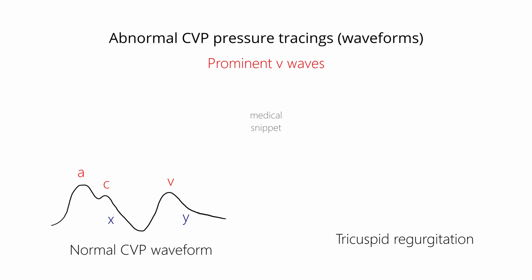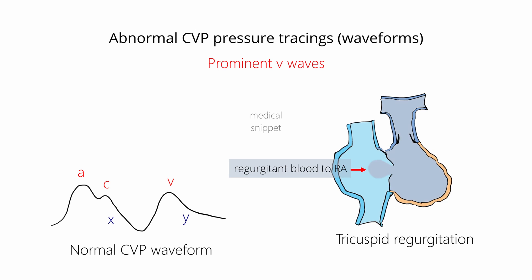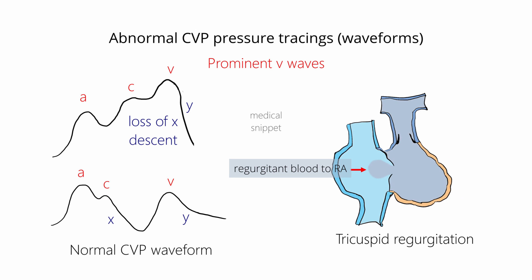In tricuspid regurgitation, there is backflow of blood to the right atrium when the right ventricle starts to contract. This makes the C wave more prominent, there is loss of X descent, and the V wave fuses with the C wave. This results in a huge regurgitant C-V wave, in which the V wave is more prominent and reflects the right ventricular systolic pressure.